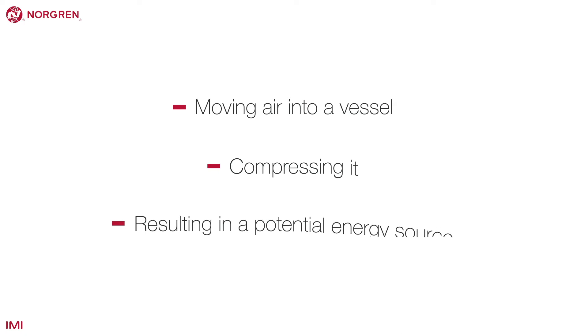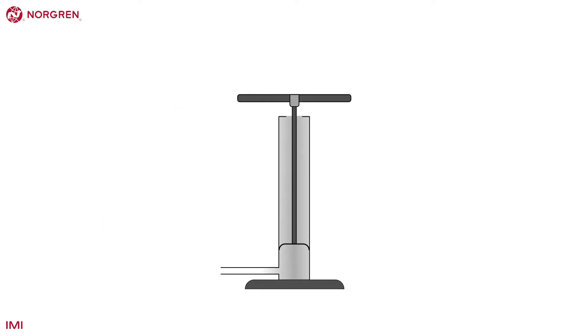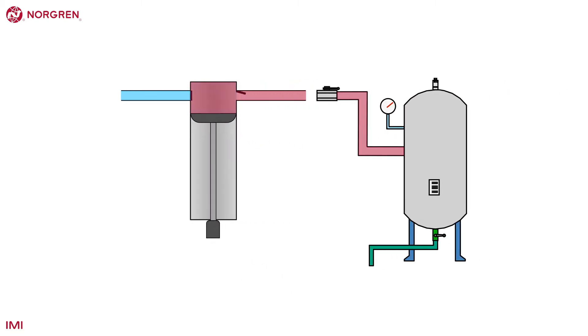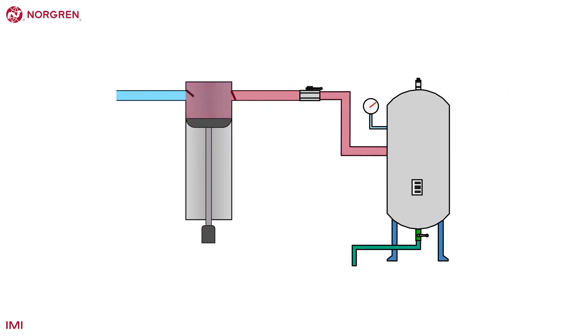One of the simplest forms of air compressor is a bicycle pump. As we pull the handle back we draw air into the chamber. As we push the handle we compress it. This is the principle that most compressors work on with a motor replacing your arm and a receiver to store the compressed air or energy.